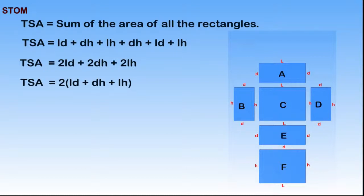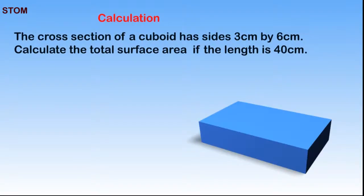Let's look at this example. The cross section of a cuboid has size 3cm by 6cm. Calculate the total surface area if the length is 40cm.